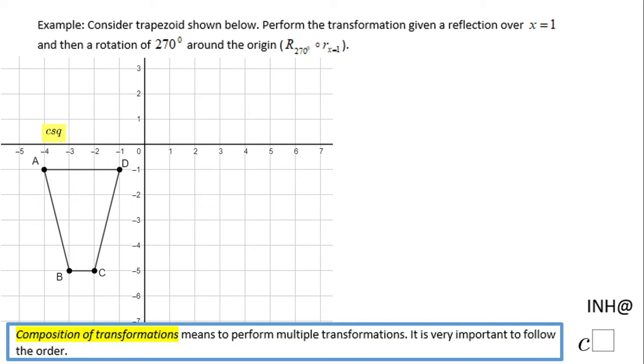Welcome or welcome back to I Need Help at C Square. In this example we have a trapezoid which you see here. We need to perform two transformations: one is a reflection over x equals 1, which is this line which I'm going to do graphically.